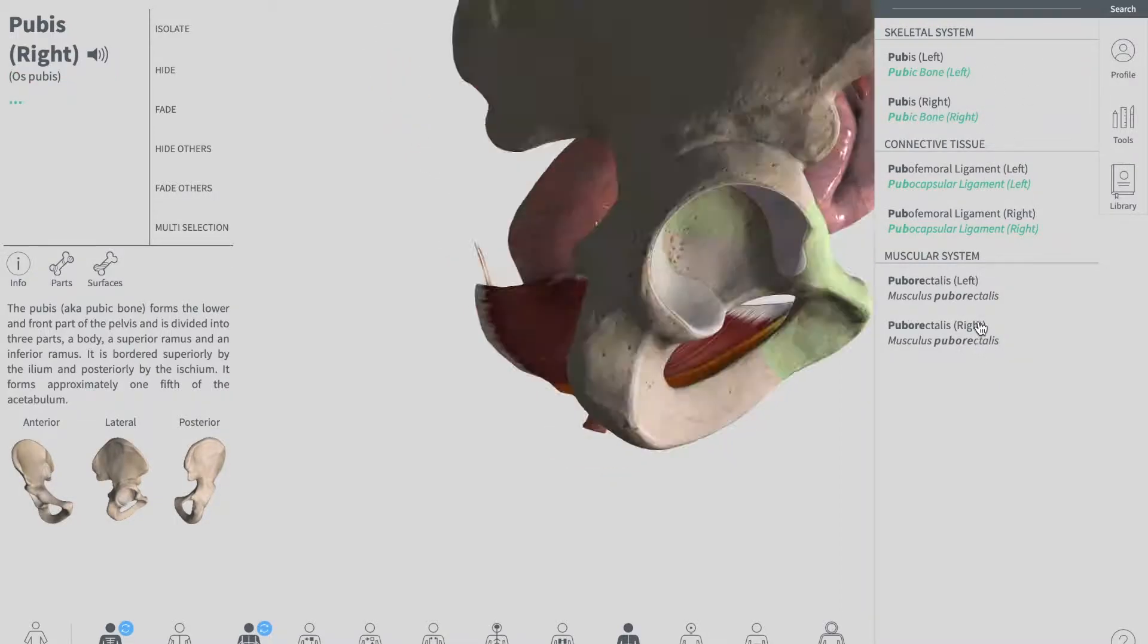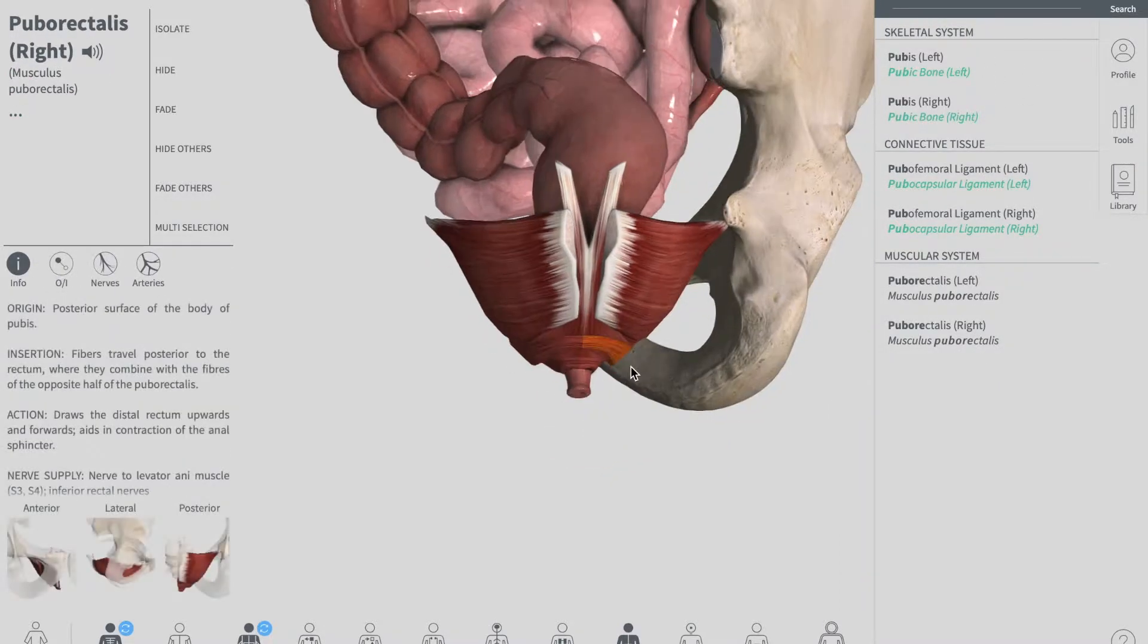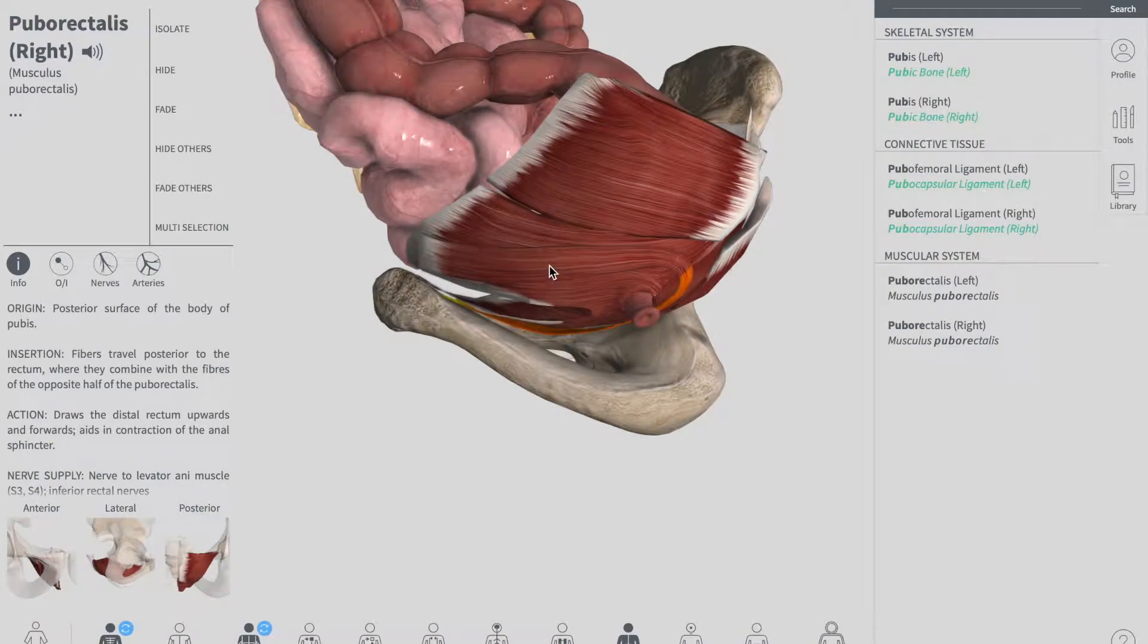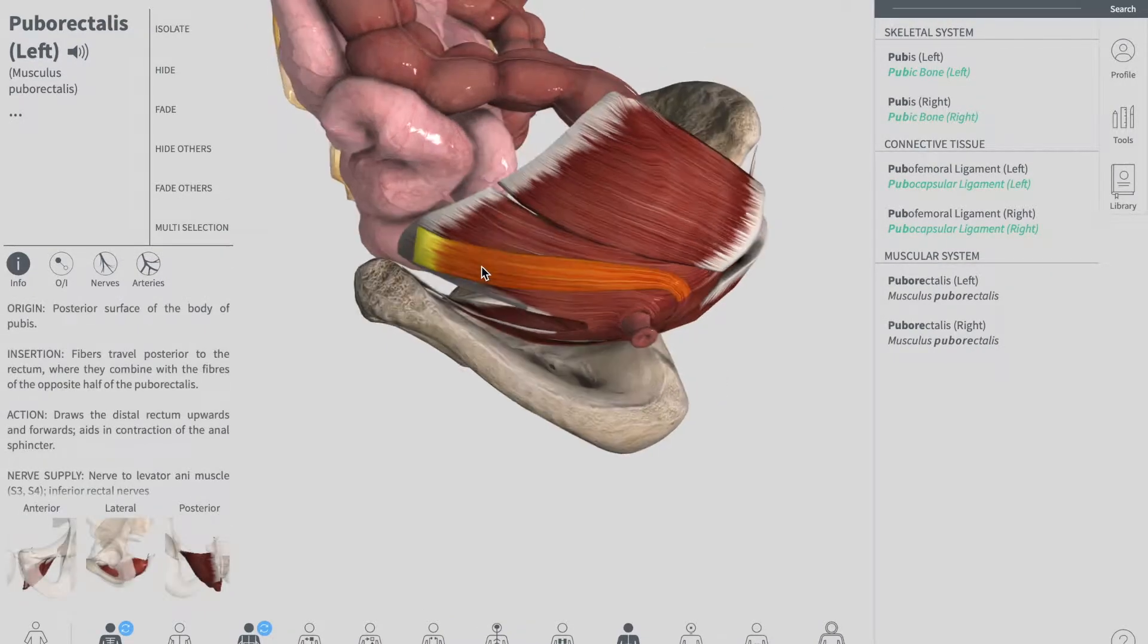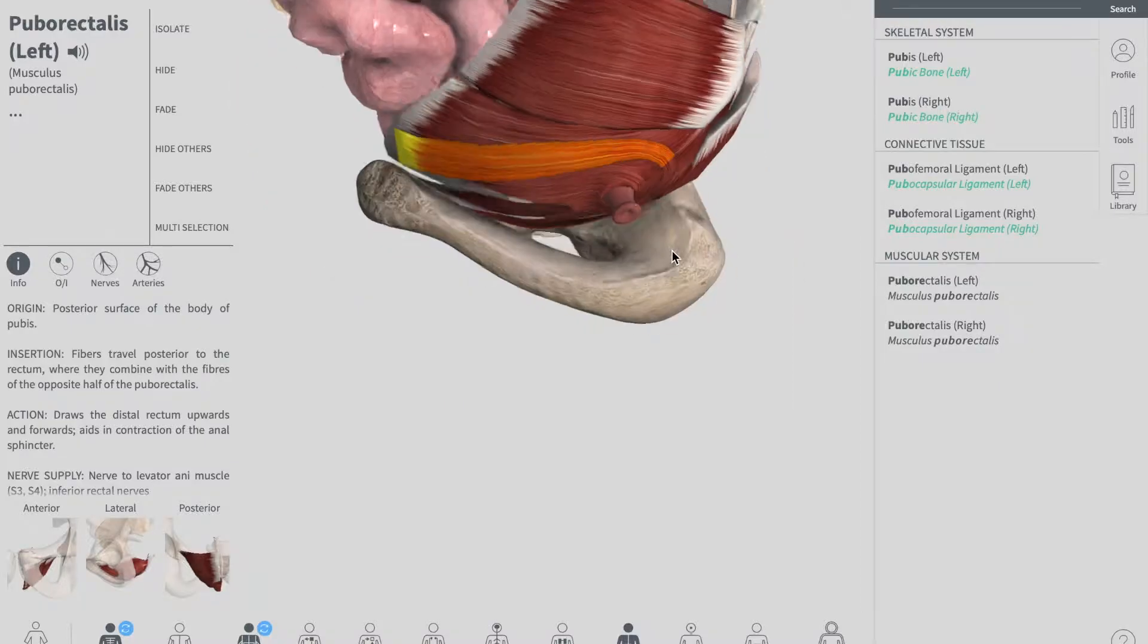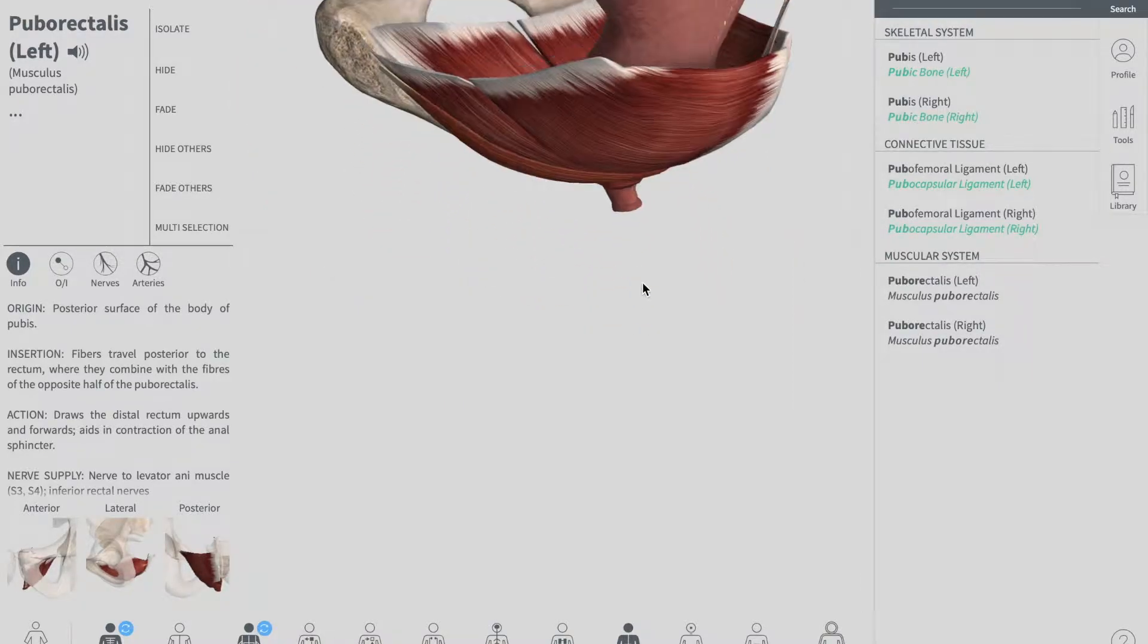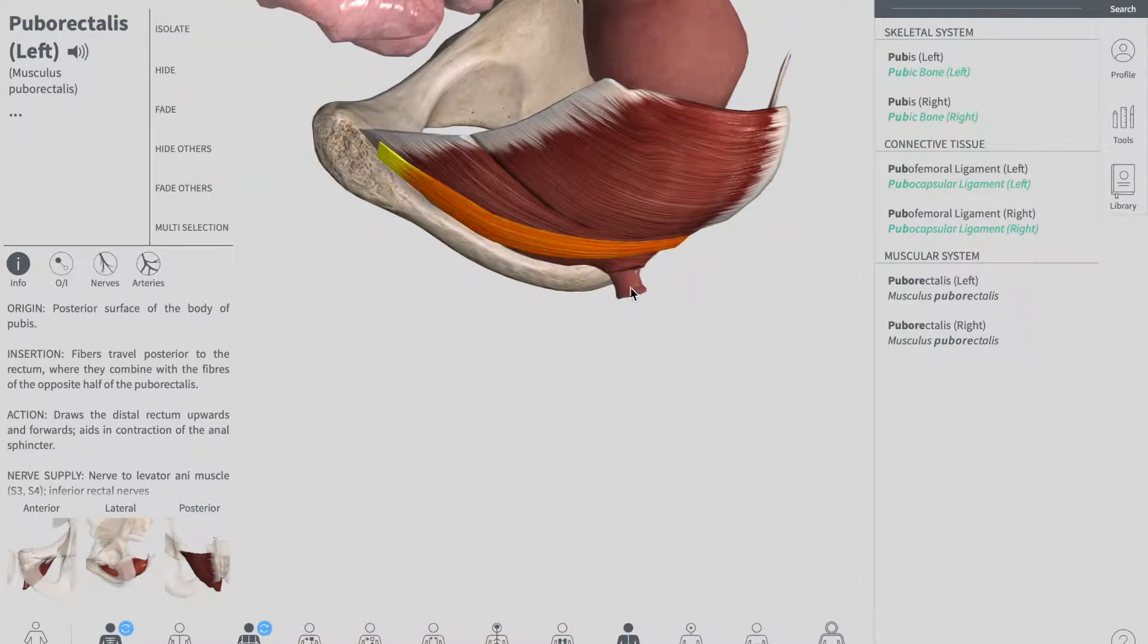Right over there, so you see these tiny two muscles, this one down there and the other one down there, and in between we have got the rectum. So this kind of pushes it around and forms a flexor which you call the anorectal flexure, and it contributes significantly in your fecal continence.